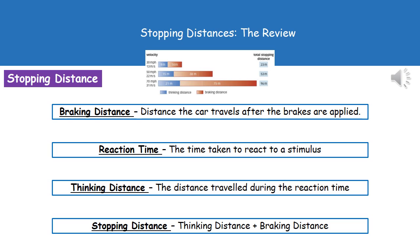Finally, the stopping distance is the thinking distance plus the braking distance. A common exam question will tell you that the thinking distance is 15 metres and the braking distance is 38 metres, and ask for the total stopping distance. All you need to do is add 15 and 38 to get an answer of 53 metres.